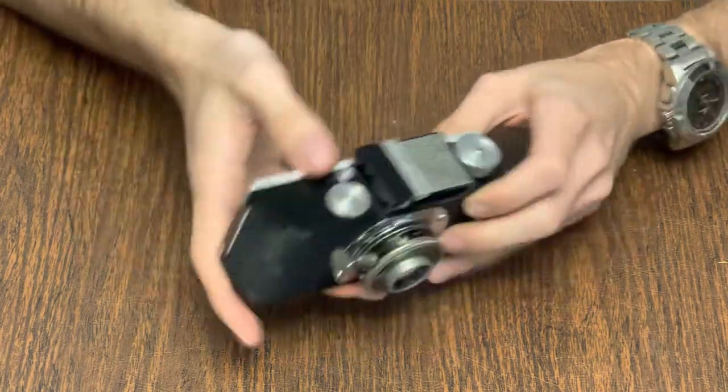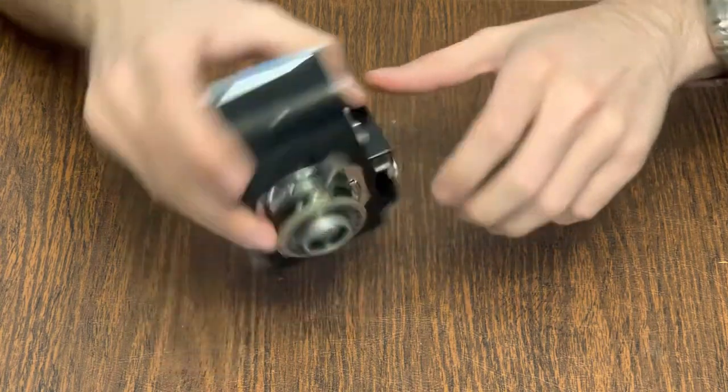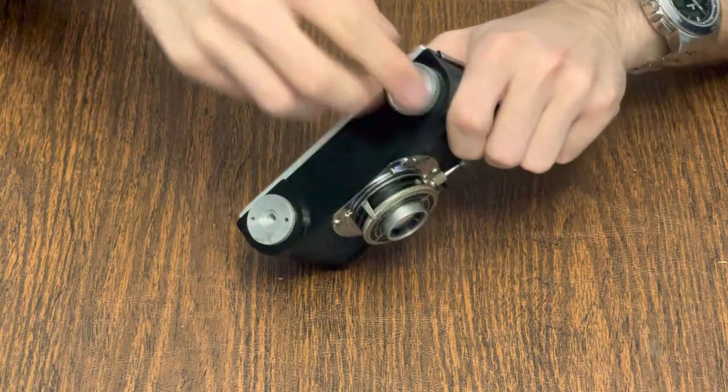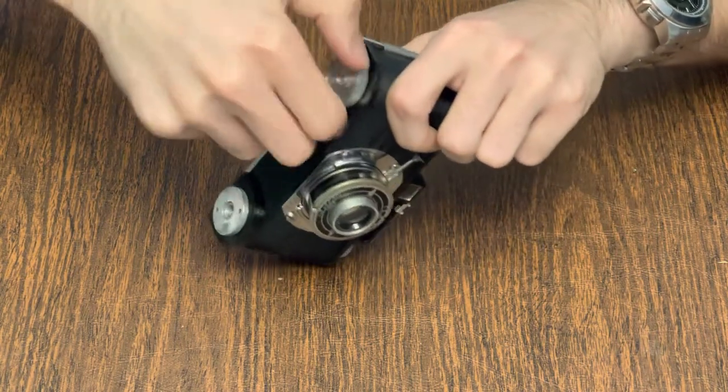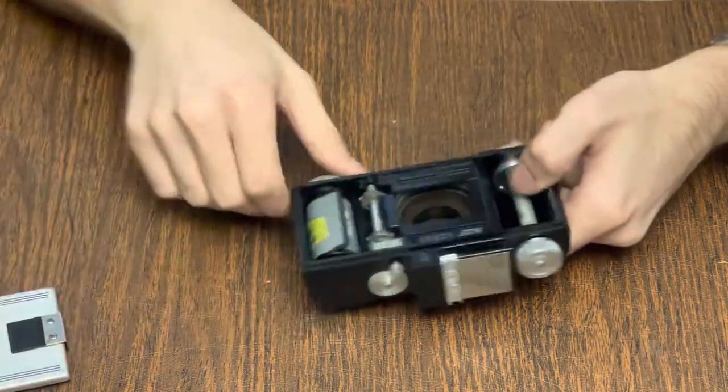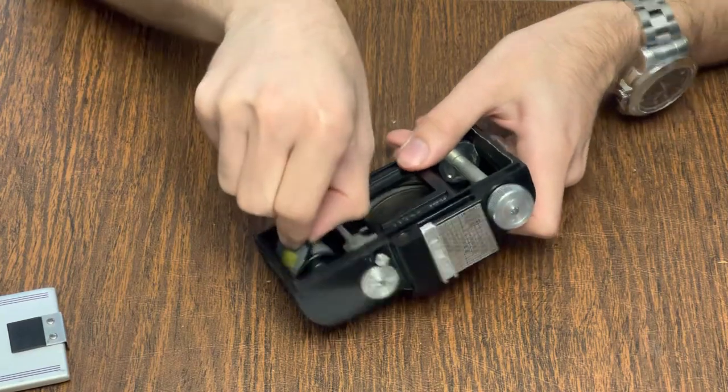Once you're done with this roll and it no longer wants to wind, even when pressing the button, flip the camera over and twist the rewind knob in the direction of the arrow until the film is all back in the cassette. Then simply open up the back and replace the old roll of film with the new one to take more pictures.